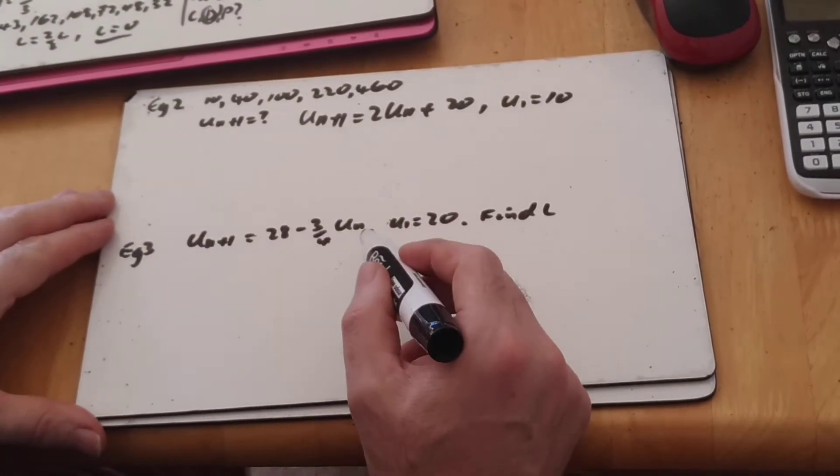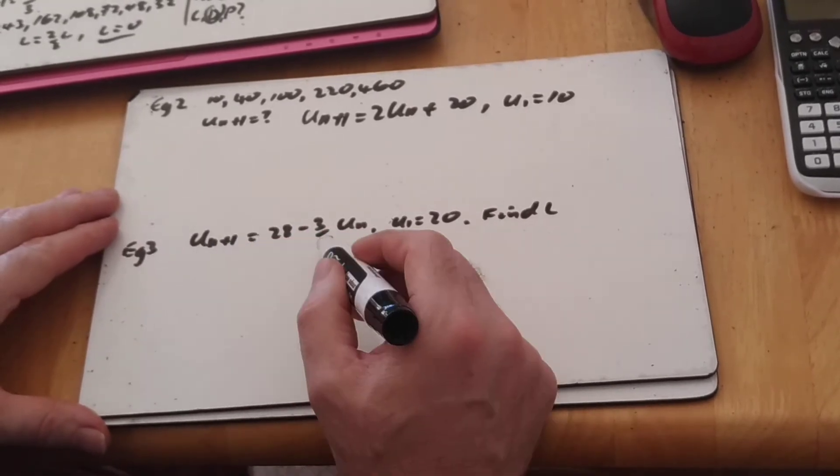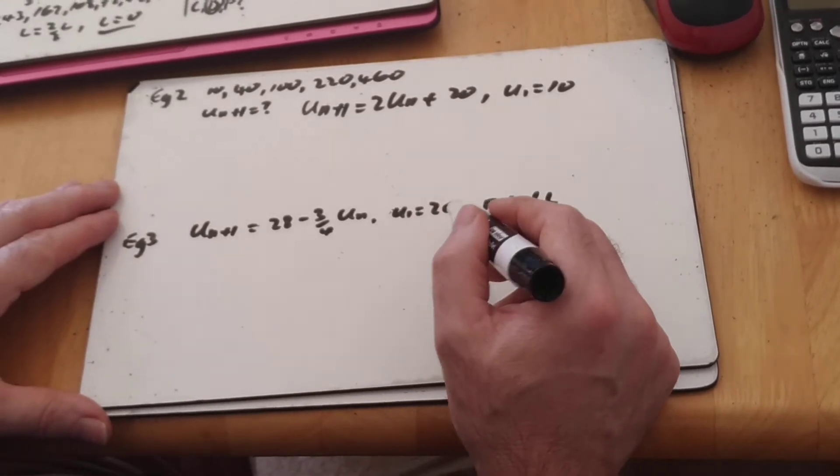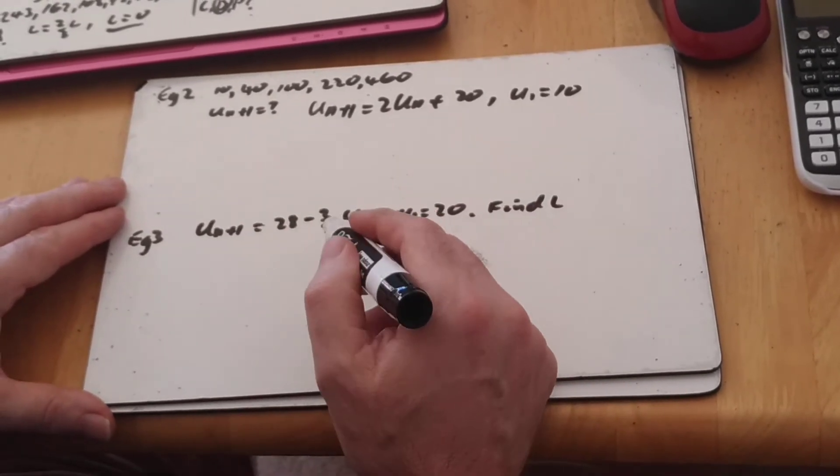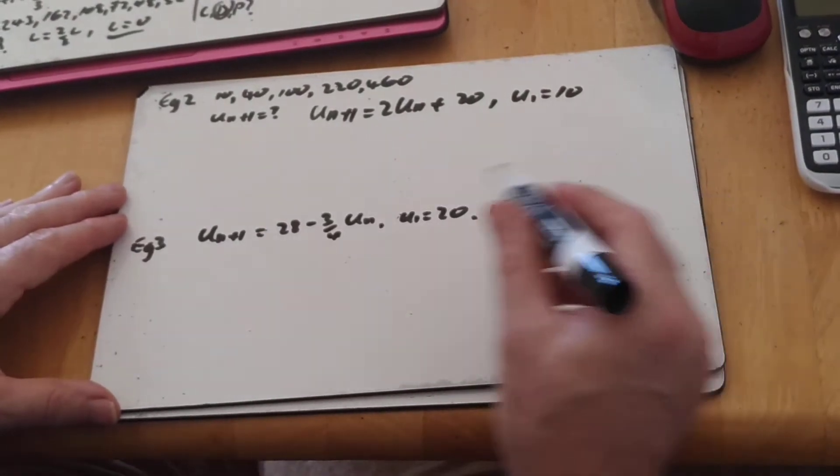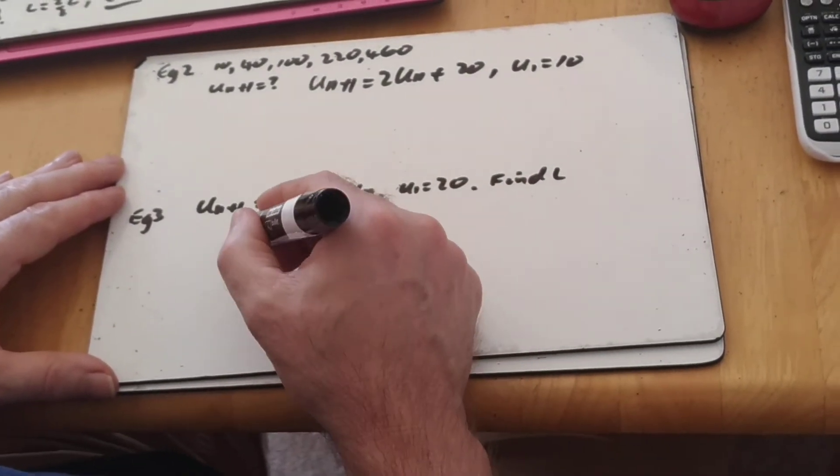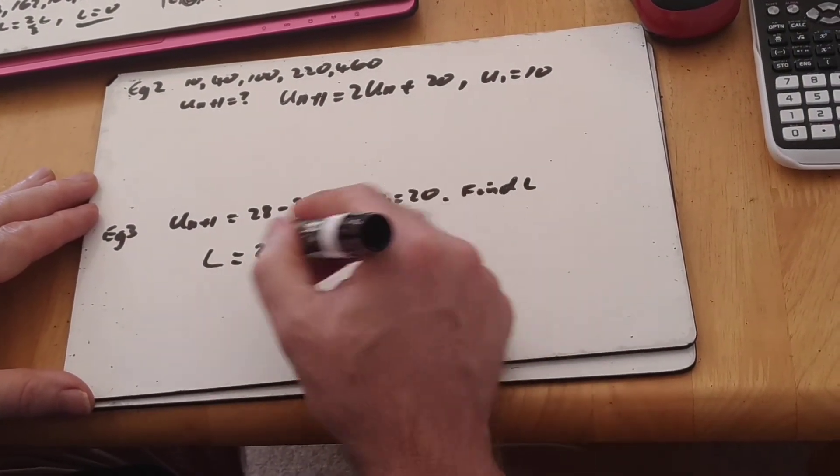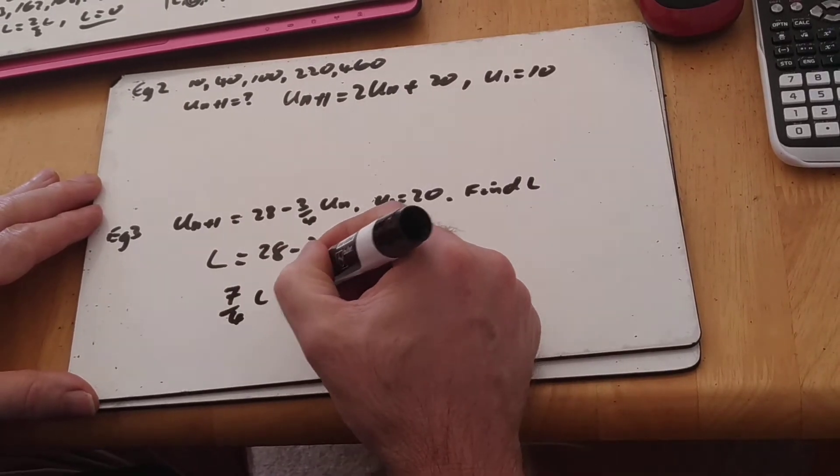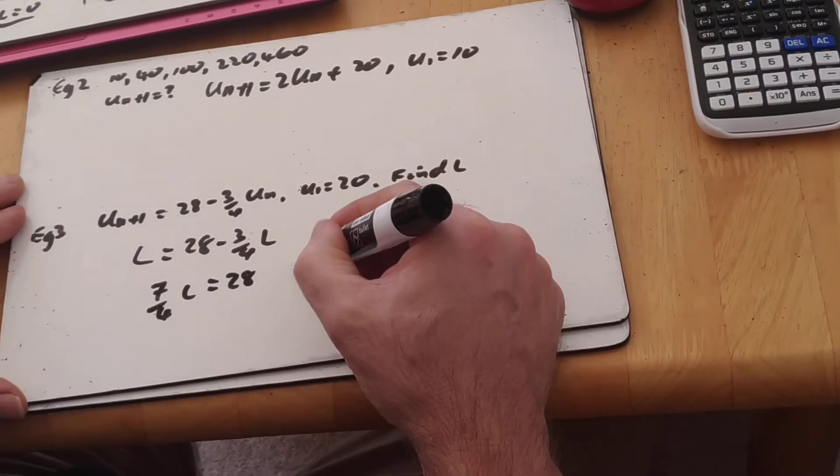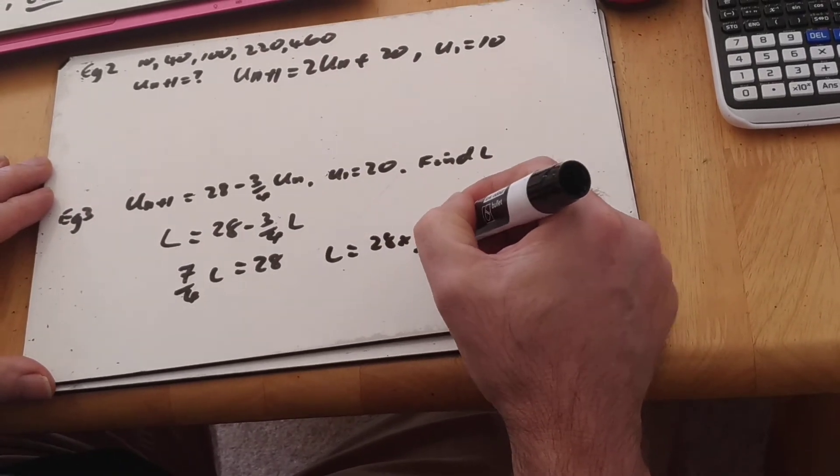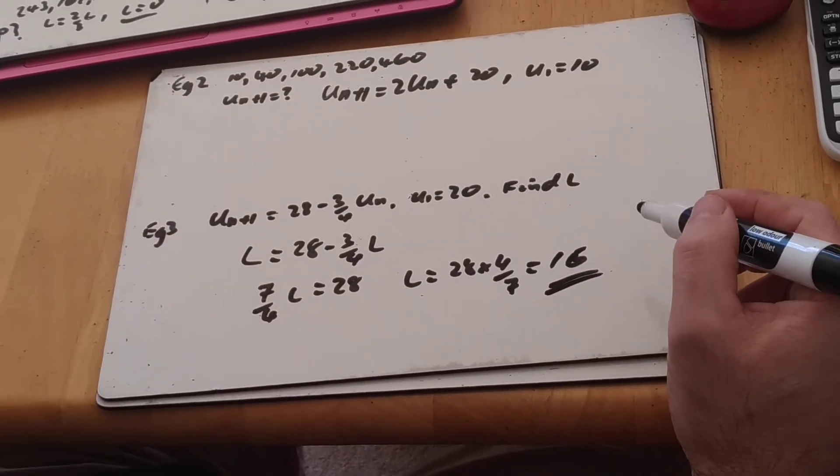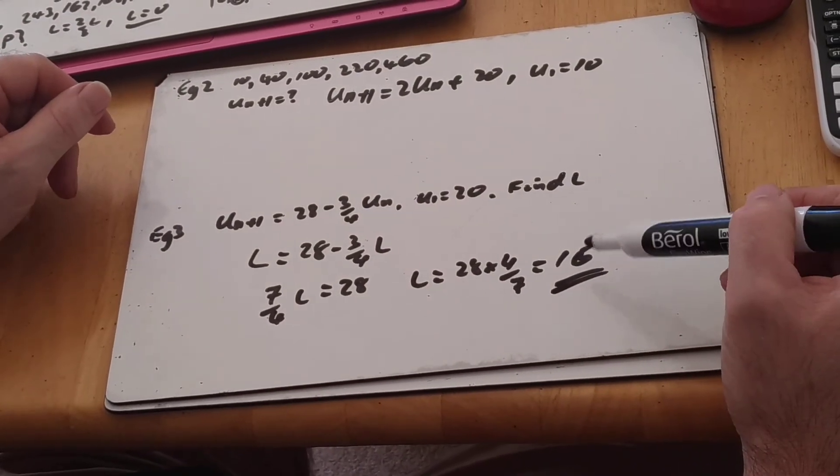Example 3 gives us the inductive formula, gives us the first term and asks us to find out. In this case, giving us the first term is a bit irrelevant because if you only want the limiting value, it doesn't matter where we start, it will always end up at the same limiting value. So in this case here, we can stick L equals 28 minus 3 quarters of L. Move it across. 7 quarters of L equals 28. L equals 28 times 4 over 7, which is 16. So in that case there, no matter where it starts, it will always end up going to 16.